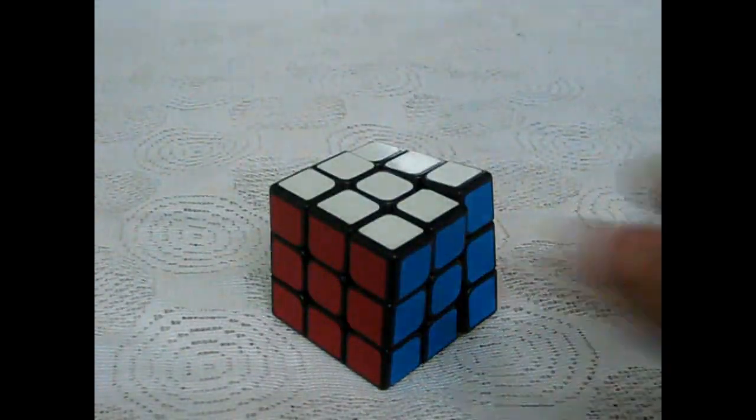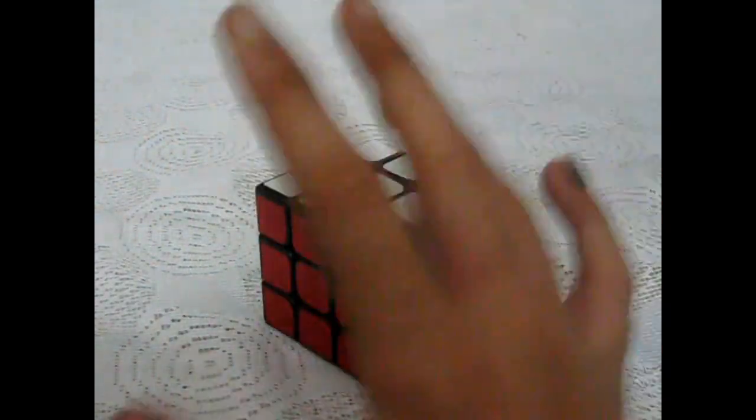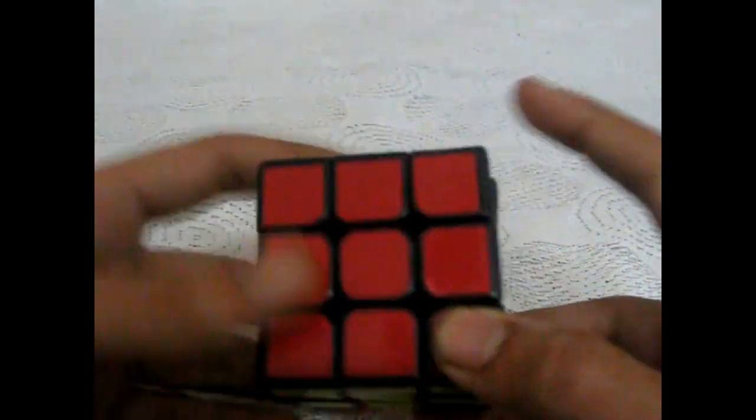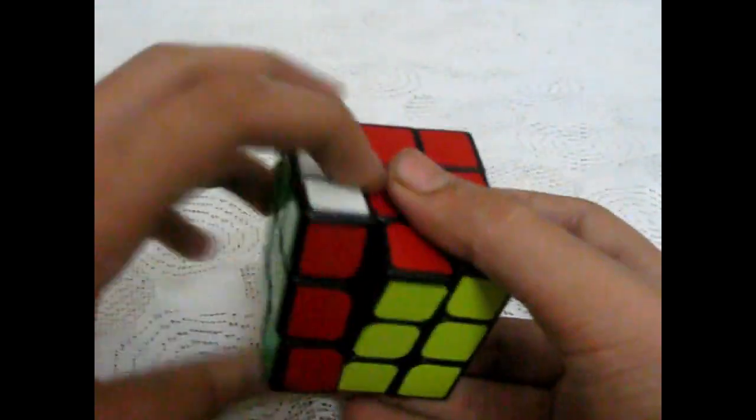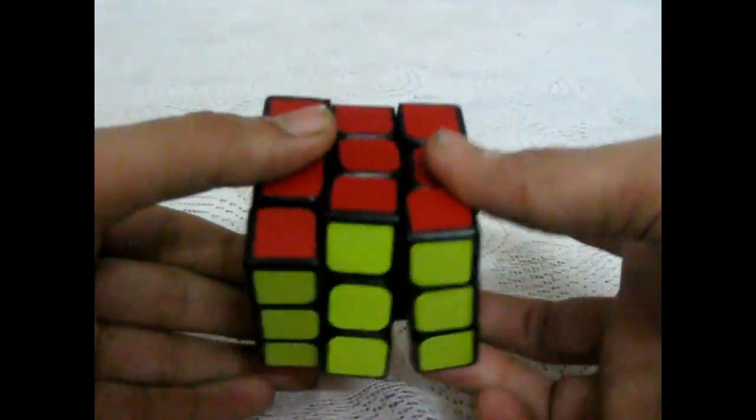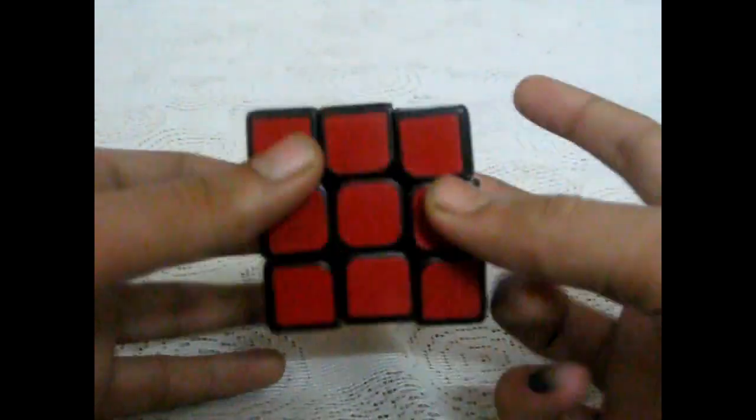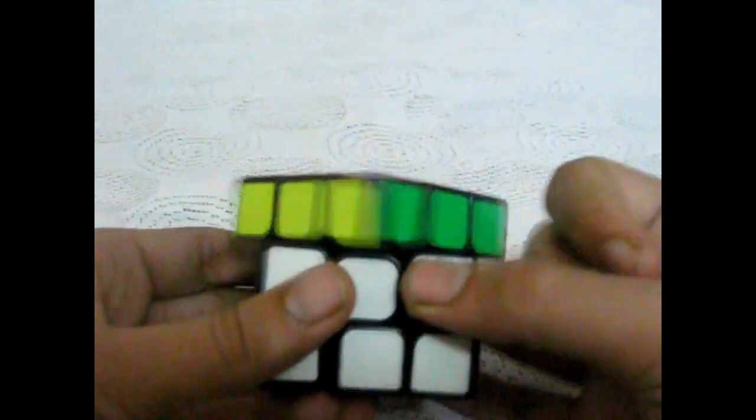The third type of movement is when you have to move the layer twice, no matter in which direction. So, R2, L2, U2, D2, F2, and D2.